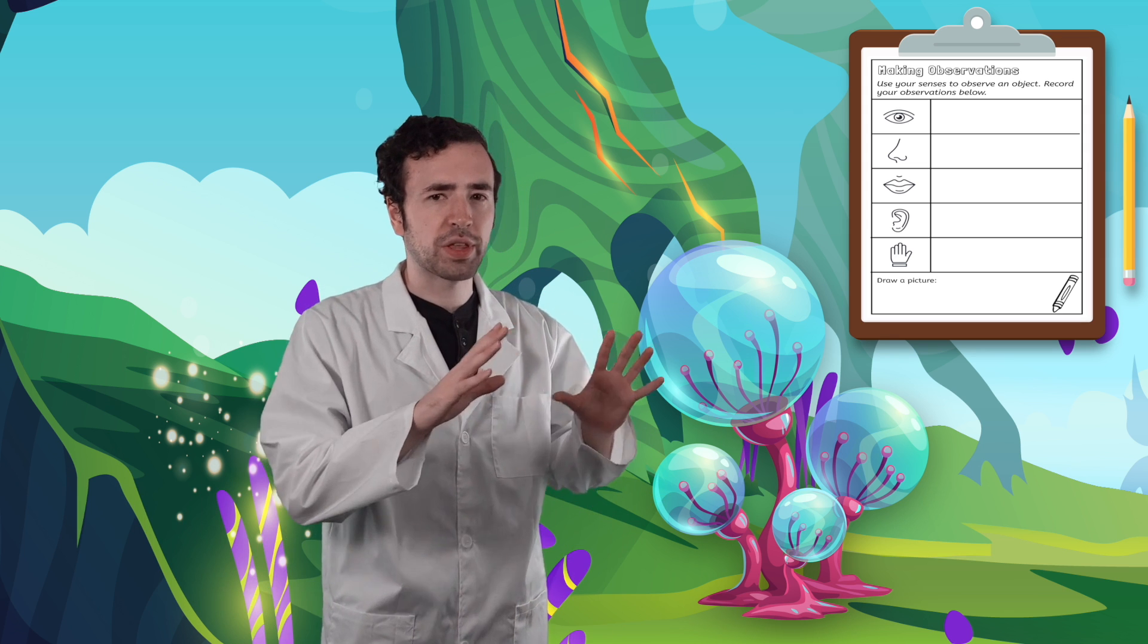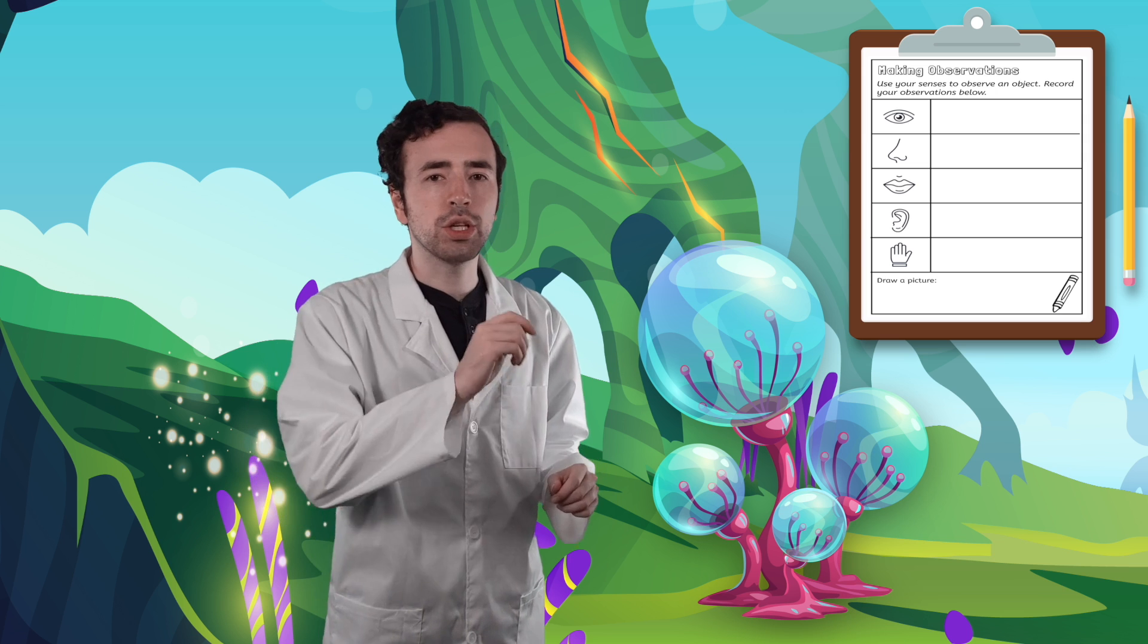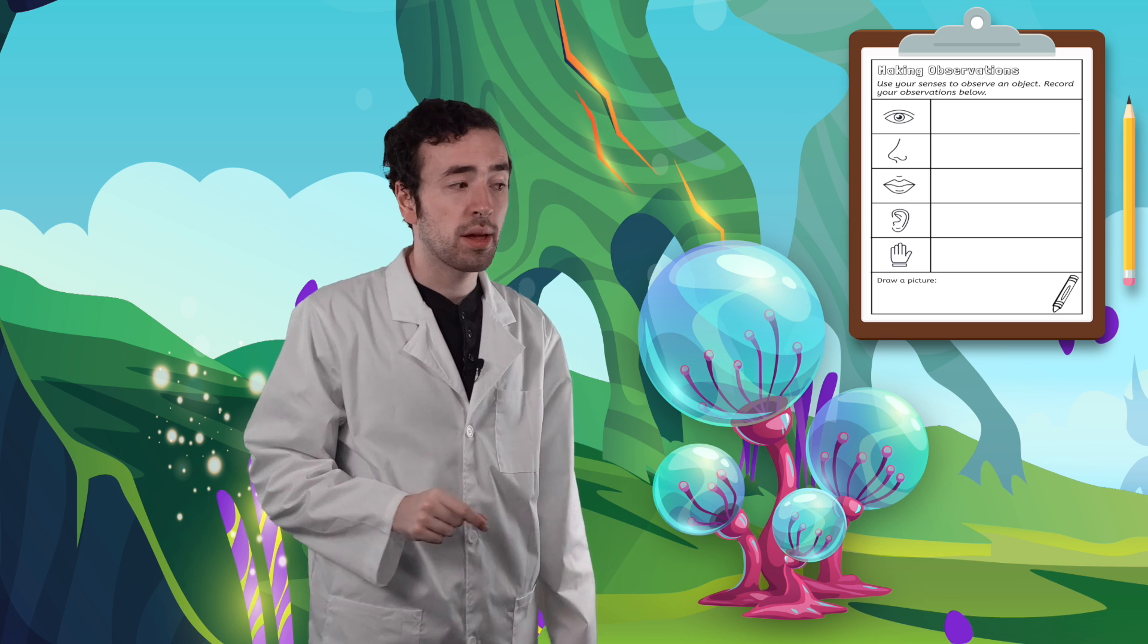Okay. The first thing I'm observing is the unique color and shape of this plant. Write this down in the sight section. Pink and blue stems with round bubbles at the top. That's what I observed with my sense of sight.